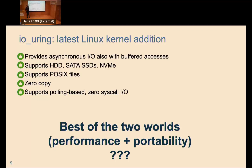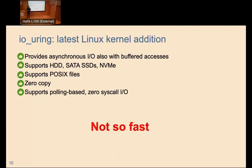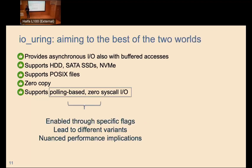Looking at all those green checkmarks, it seems io_uring already combines the best of both worlds. But what we find in this study is that's not quite the case. The polling-based and zero-system-call approaches are not the default in io_uring — they have to be enabled through system flags when io_uring is initialized, and the application has to be built around those configuration flags. The combination of these flags leads to very nuanced application performance behaviors that have not been discussed before.